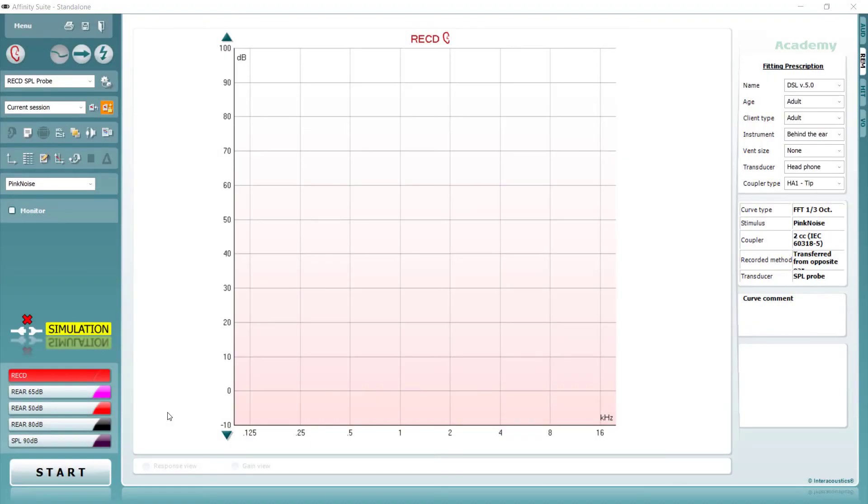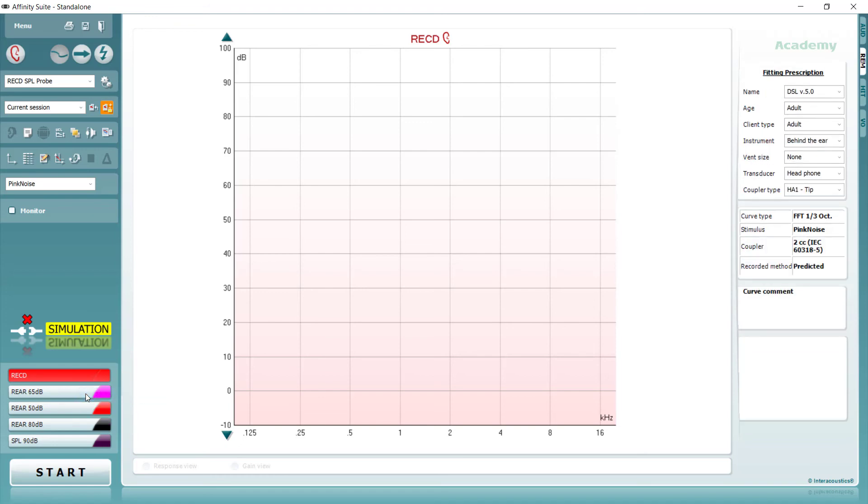Sometimes it isn't possible to record an RECD at all. This can happen for a number of reasons. For instance, perhaps the patient is not sufficiently cooperative, or maybe there is excessive wax in the ears, or they present with an ear infection on the day of the measurement. In these cases, it is possible to use the predicted RECD by clicking on RECD for the ear in question and selecting Show Predicted RECD. This can then be used for the verification process.